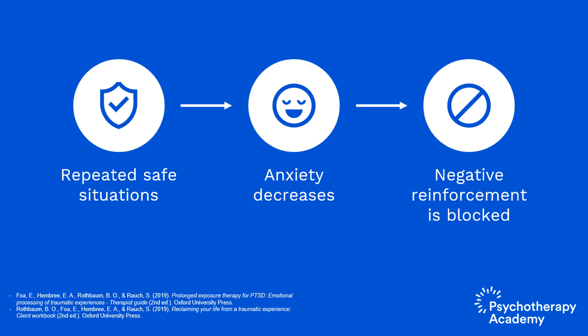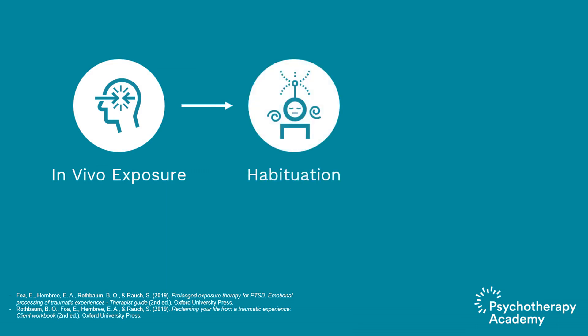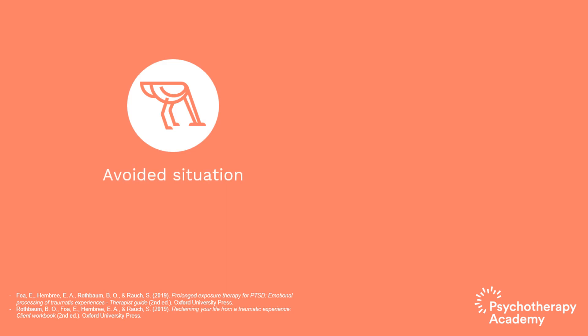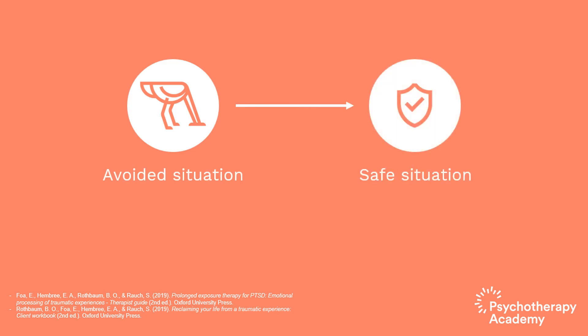We want the child to stay with the animal — that's why we might start with a cute little puppy he's not as scared of — and stay with that animal long enough that his body and brain register there's nothing to be scared of. In vivo exposure results in habituation, so the target situation becomes increasingly less distressing. Habituation is basically getting used to something; the stimulus doesn't change, but the response decreases. In vivo exposure also fosters the realization that the avoided situation is actually safe — if I'm staying in the situation and nothing bad is happening, it registers that maybe it's not as dangerous as my body was acting like it was.